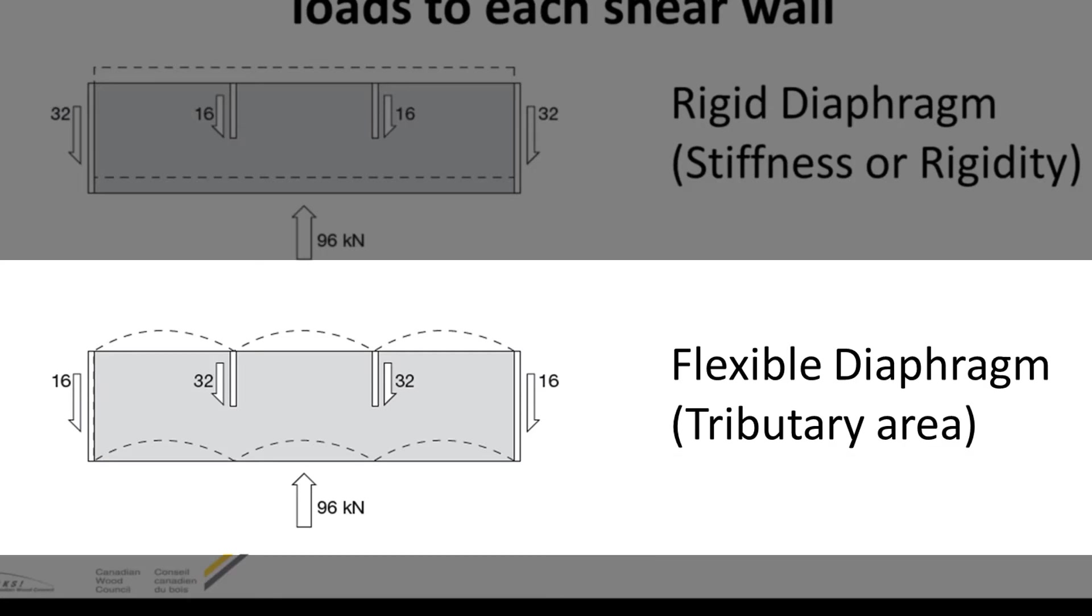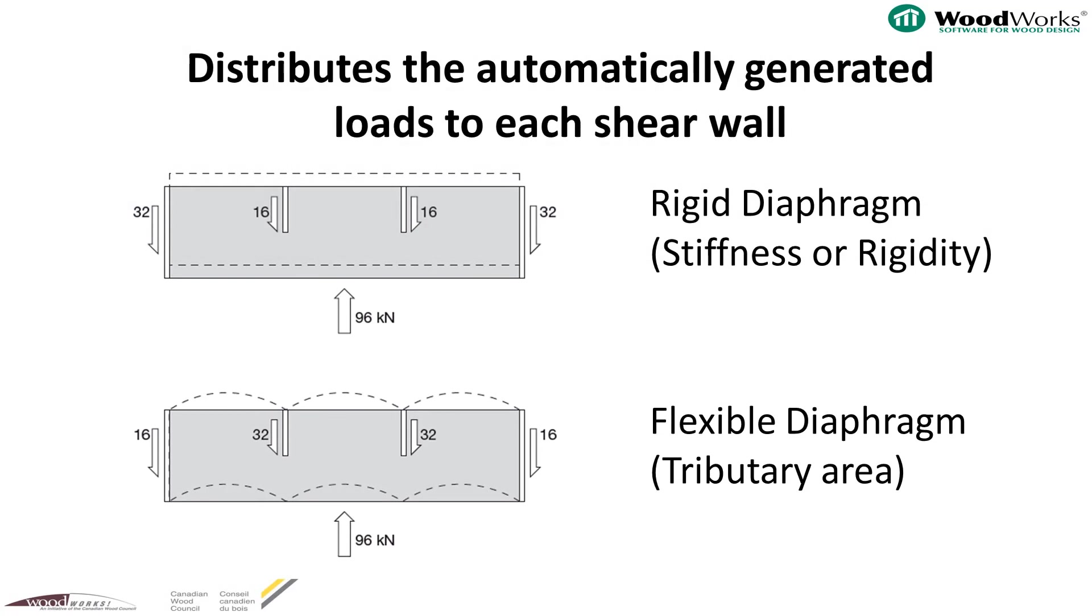The strength and stiffness of the shear lines does not affect the distribution using this method. In this case, because the interior walls have twice as much tributary area as the exterior walls, the interior shear lines attract twice as much load as the exterior walls.